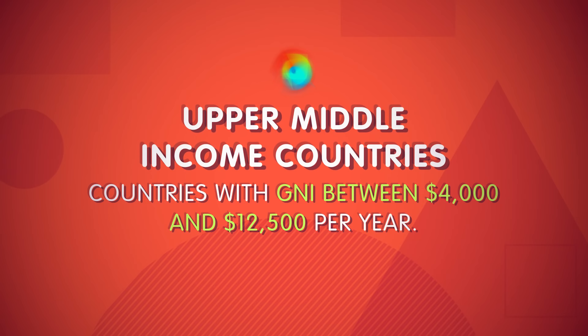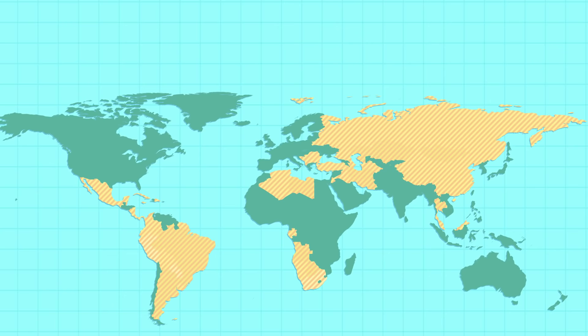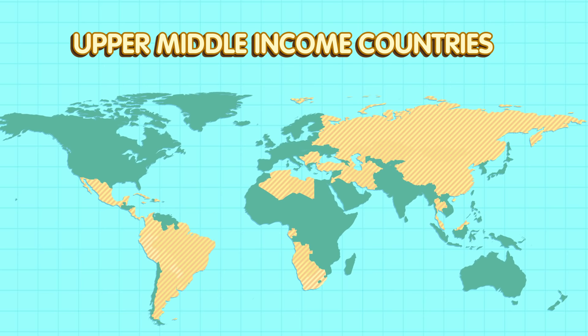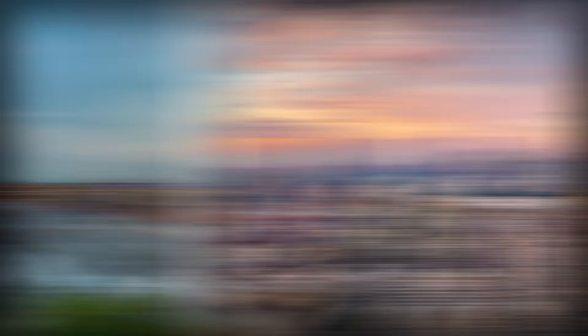The next category is upper-middle-income countries, defined as those with GNI between $4,000 and $12,500 per year. There are 56 countries in this group, and they tend to have advancing economies with both manufacturing and high-tech markets, such as China, Mexico, Russia, and Argentina. They're also heavily urban, have access to public infrastructure like education and health, and have comfortable standards of living for most citizens — not too different from a high-income country.